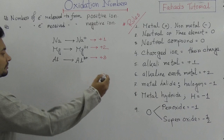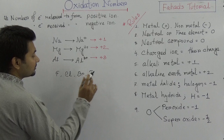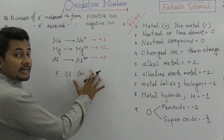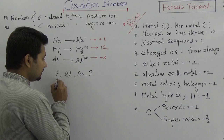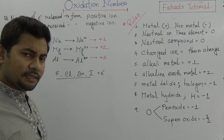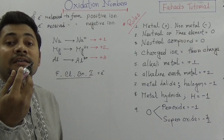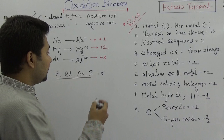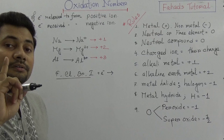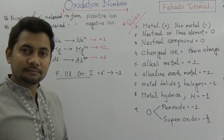Similarly, non-metals have negative oxidation numbers. Group 17 elements — fluorine, chlorine, bromine, iodine — are halogens. They have seven electrons in their outermost shell and need one more to complete their valence octet. So they each accept one electron, giving them an oxidation number of minus 1.